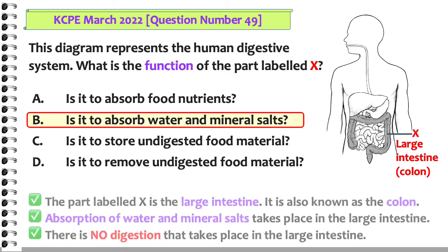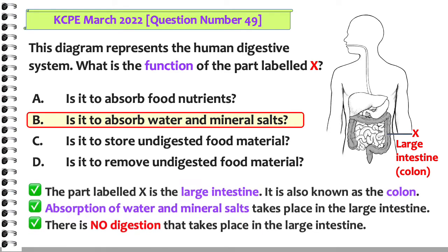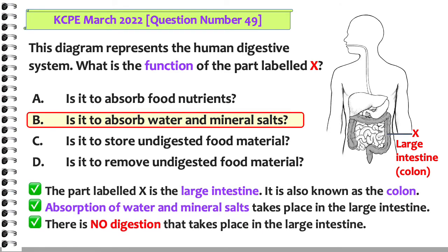The answer is B. The part labeled X is the large intestine, also known as the colon. Absorption of water and mineral salts takes place in the large intestine. There is no digestion that takes place in the large intestine.